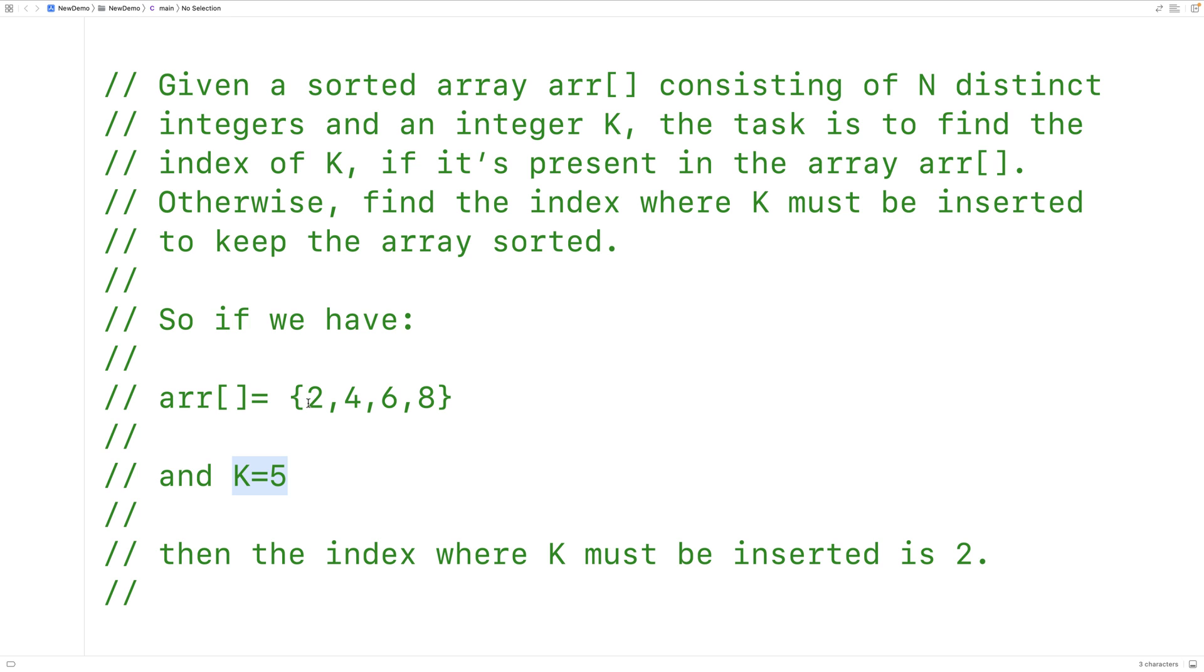And we know that because 2 is less than 5, 4 is less than 5, but 6 is greater than 5. And so if we want to keep the array sorted, K would have to be inserted right here. And so K, which in this case is 5, would have to be inserted at index 2.